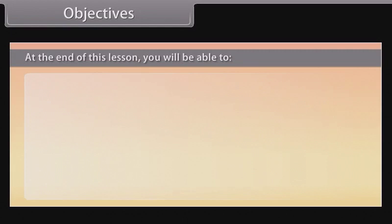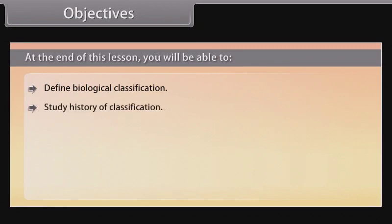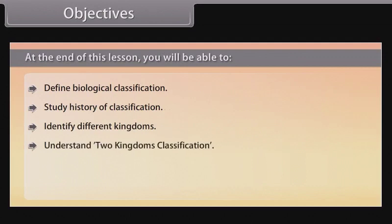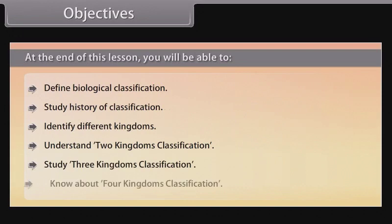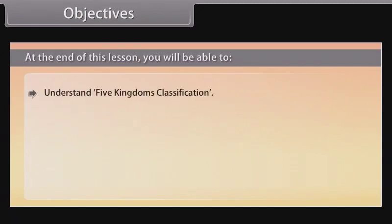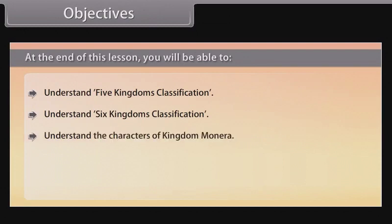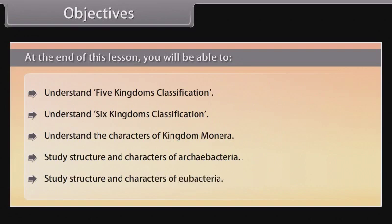At the end of this lesson, you will be able to: define biological classification, study history of classification, identify different kingdoms, understand two kingdoms classification, study three kingdoms classification, know about four kingdoms classification, understand five kingdoms classification, understand six kingdoms classification, understand the characters of kingdom Monera, and study the structure and characters of archibacteria and eubacteria.